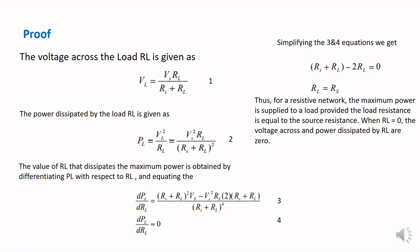Now we find the value of RL that dissipates maximum power, obtained by differentiating PL with respect to RL. Setting dPL/dRL equal to zero and simplifying, we get RS plus RL minus 2RL equals zero, which gives RL equals RS. This proves that for a resistive network, maximum power is delivered to the load when the load resistance equals the source resistance.